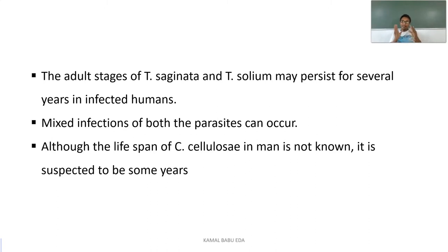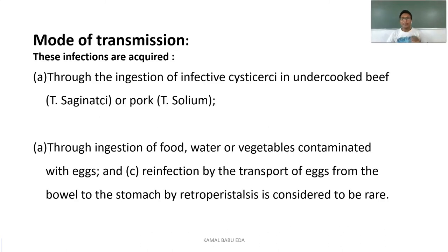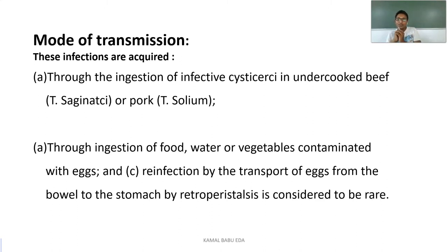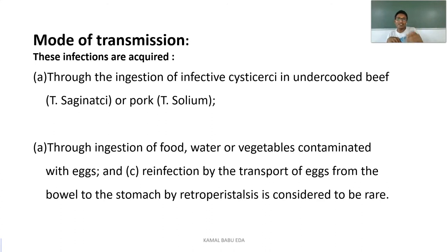The lifespan of Cysticercus cellulosae in man is not known but is suspected to last many years. Regarding mode of transmission: this disease is mainly transmitted to humans through ingestion of infected meat. Disease also results from consumption of food, water, or vegetables contaminated by eggs of Taenia saginata or Taenia solium, or sometimes through retroperistaltic movement of eggs from the bowel to the stomach — though this is very rare.